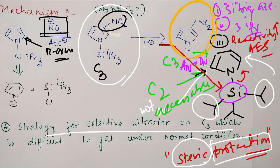This is a selective strategy for nitration at C3 position, which is generally difficult to get for normal pyrrole because it is very reactive and selective for C2. But because of steric protection, we can get reactivity at C3.